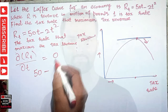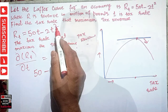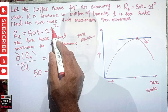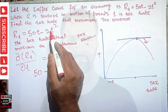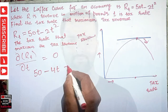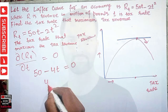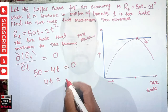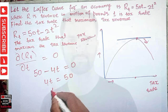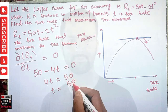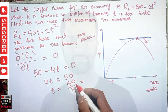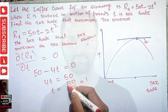Differentiating R = 50t - 2t² with respect to t: the derivative of 50t is 50, and the derivative of 2t² is 4t, so we get dR/dt = 50 - 4t. Setting this equal to zero: 50 - 4t = 0.